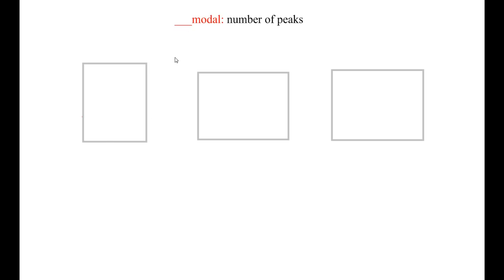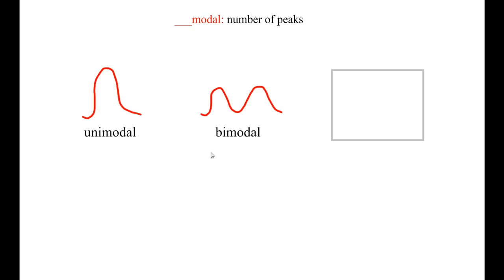When we look at things like unimodal, that means there is one peak. Uni meaning one, like a unicycle. When there are two peaks, we call that bimodal, like a bicycle. And as you may have guessed, when there are three peaks, it is trimodal, like a tricycle. And that continues upwards, but typically, you're not going to see graphs that are more than trimodal.